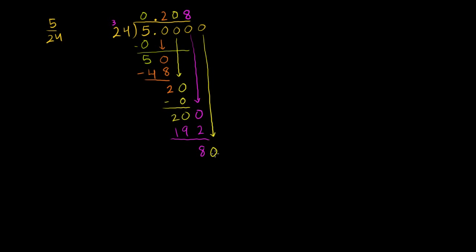24 goes into 80 three times. Can't be four times. 3 times 4 is 12. Carry the 1. 3 times 2 is 6. Add 1, 70. And then you have another 80. You bring down another 0. We have an infinite supply of 0's here, as we need them. And we're going to have another 80. Well, once again, 24 is going to go to that three times. And we're going to start repeating these 3's over and over and over again.